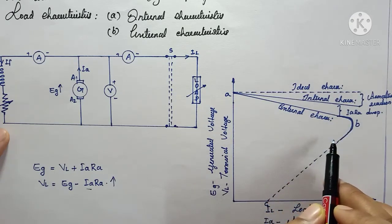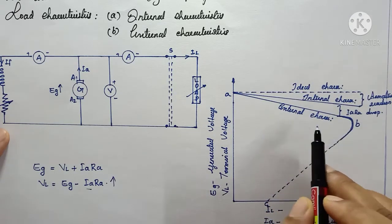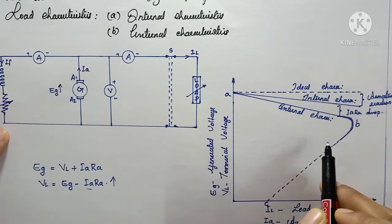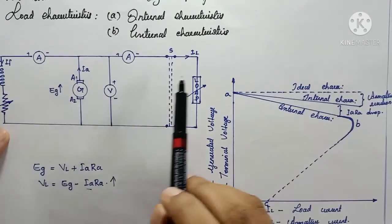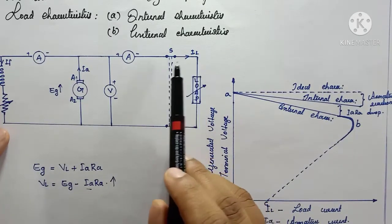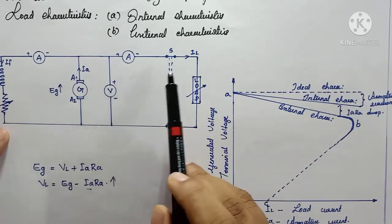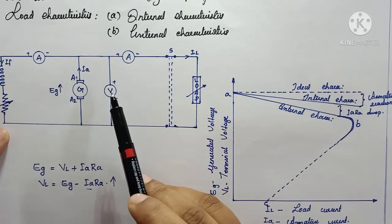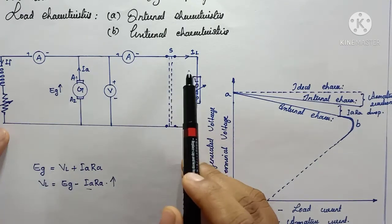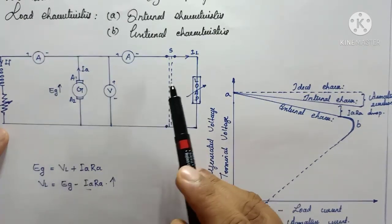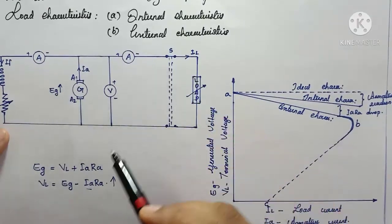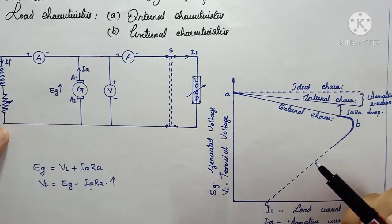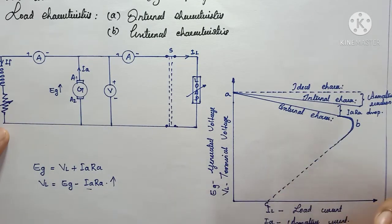This results in a dropping characteristic compared to the internal characteristics — that is the external characteristic. The external characteristic is drawn using the relationship between the external parameters: load voltage VL and load current IL. Using these two external parameters, we can draw the external characteristic curve.